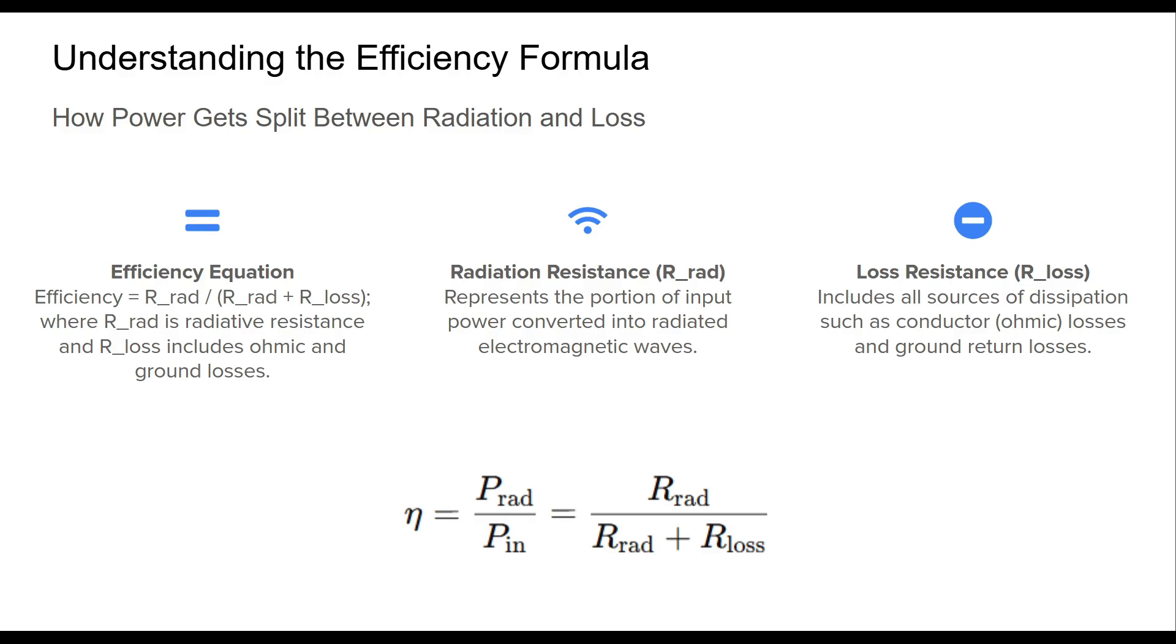Conductors heat up due to resistance, and energy is lost through ground interactions, especially with vertical antennas. The goal in antenna design is clear: maximize R_rad and minimize R_loss. In subsequent slides, we'll break down exactly where these losses come from and how to mitigate them.